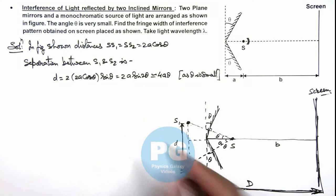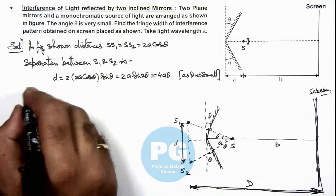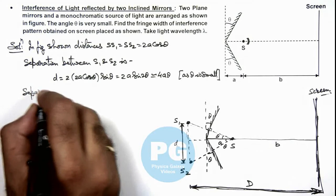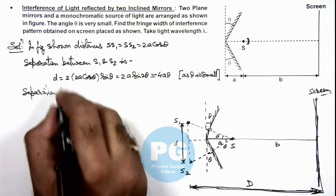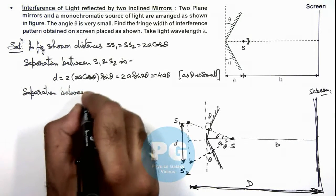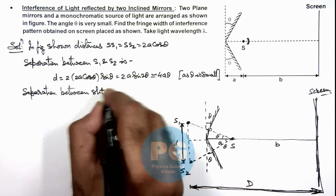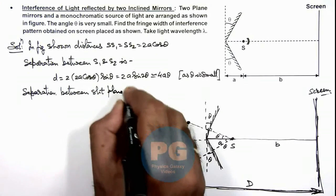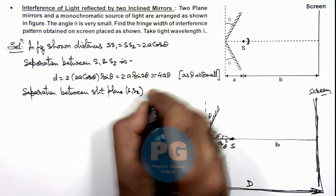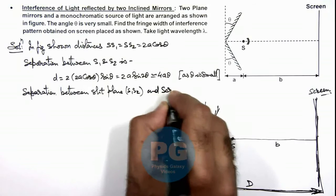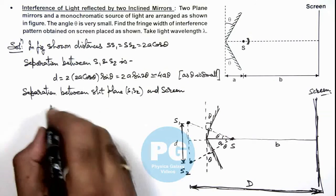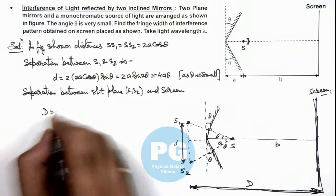Now if we wish to calculate the value of capital D, which is the separation between the slit plane and the screen, then here we can calculate the separation between slit plane which is line S1-S2 and screen. This can be given as capital D and the value would be: